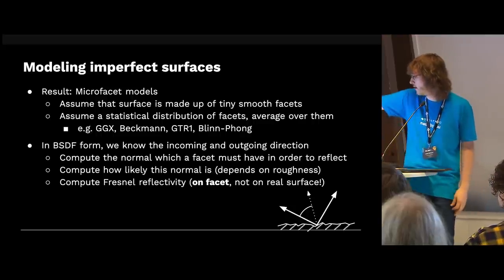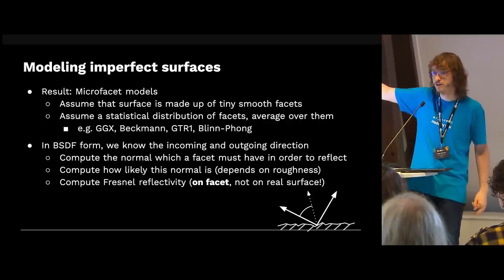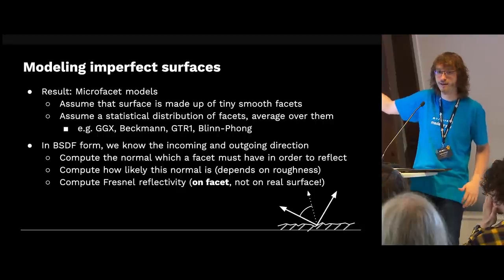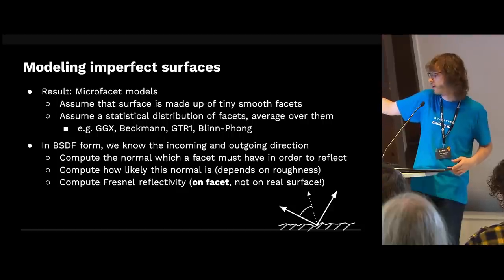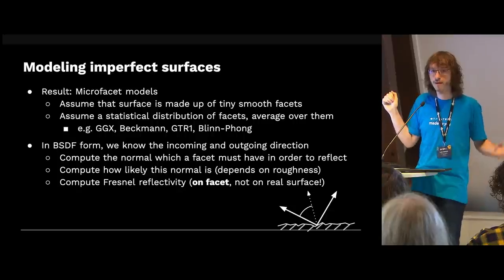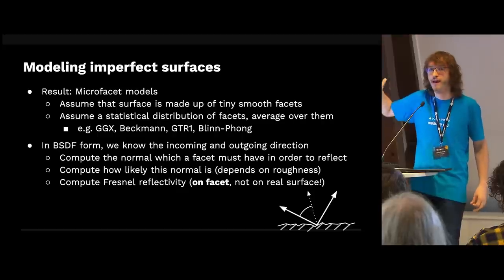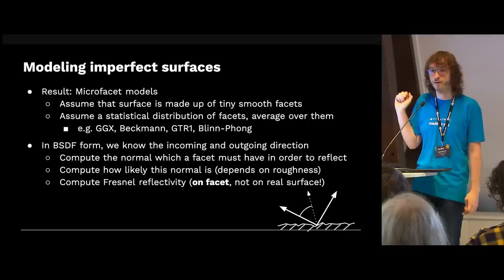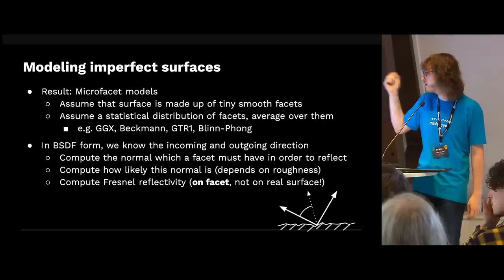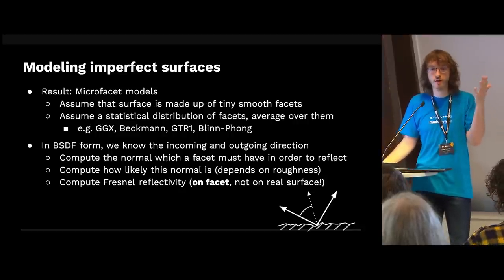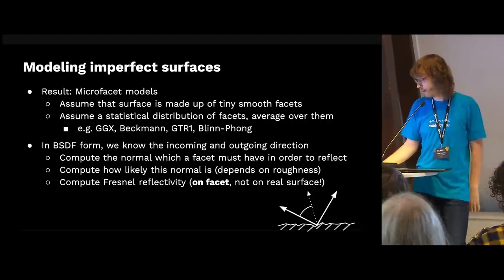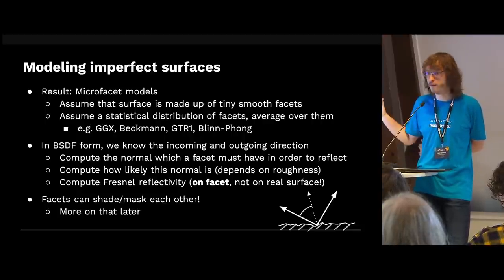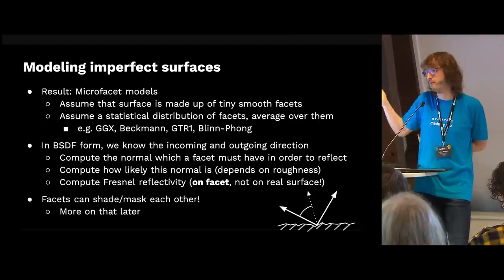To compute this, we assume we have a rough surface with known incoming and outgoing direction, so we know what direction the surface needs to point for a nice reflection. We look up how likely that direction is based on our distribution and compute the Fresnel term. Importantly, to get accurate results you need to compute the Fresnel term on the microfacet — based on the reflection angle at that facet, not the angle to the macroscopic surface. That's something Cycles was unable to do before the Principled BSDF, and still can't do if you just use the Glossy node. As the surface gets rough, facets can cast shadows on each other — that's where the darkening comes from.